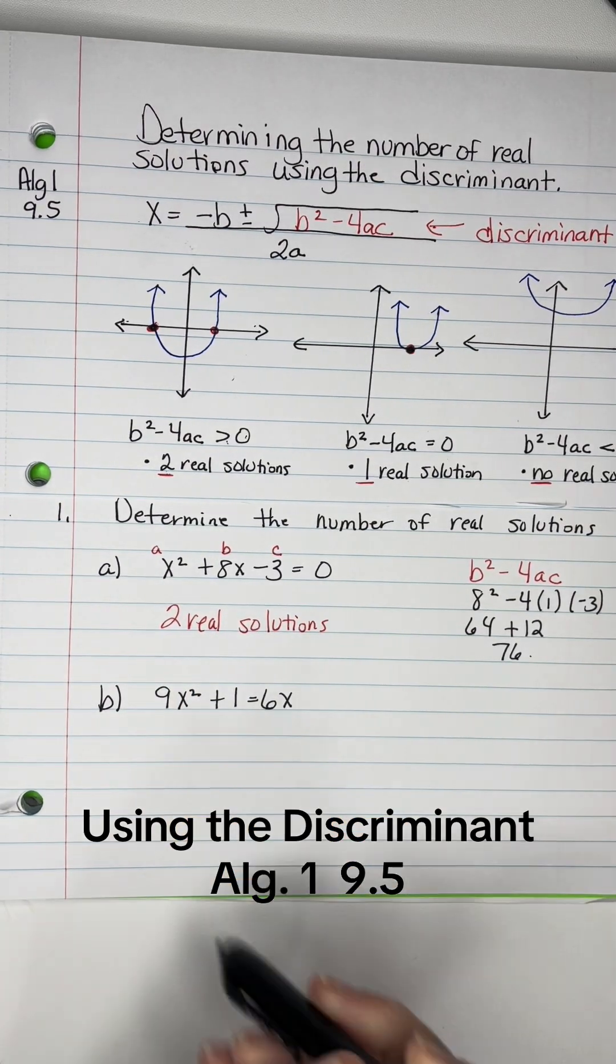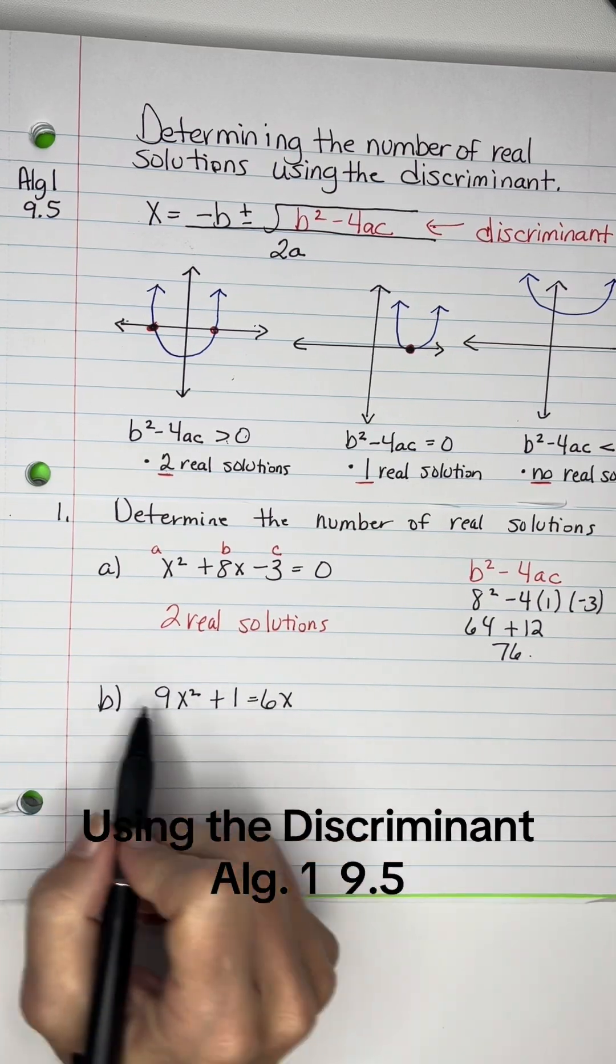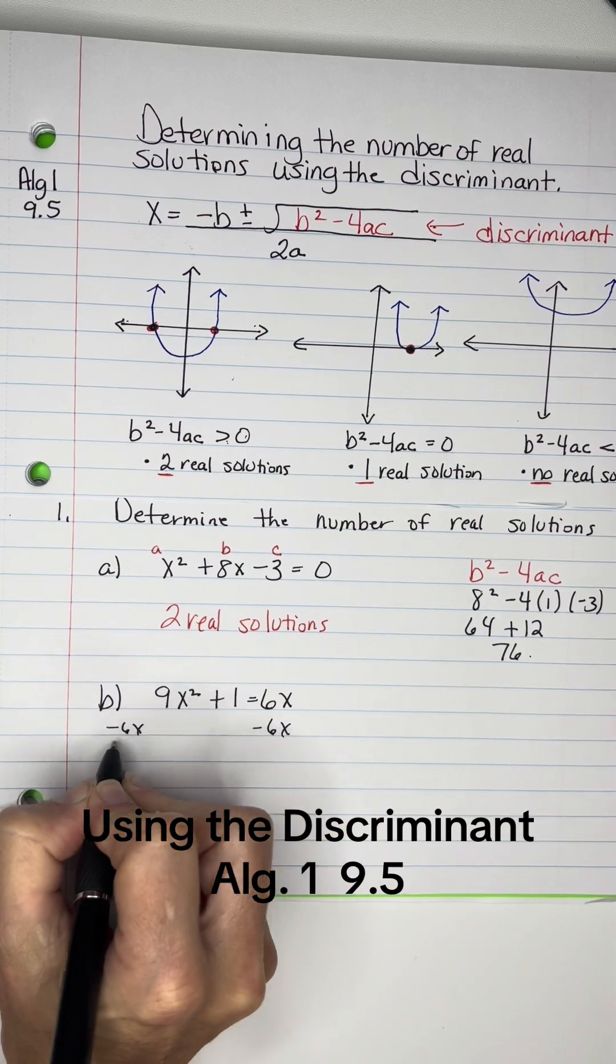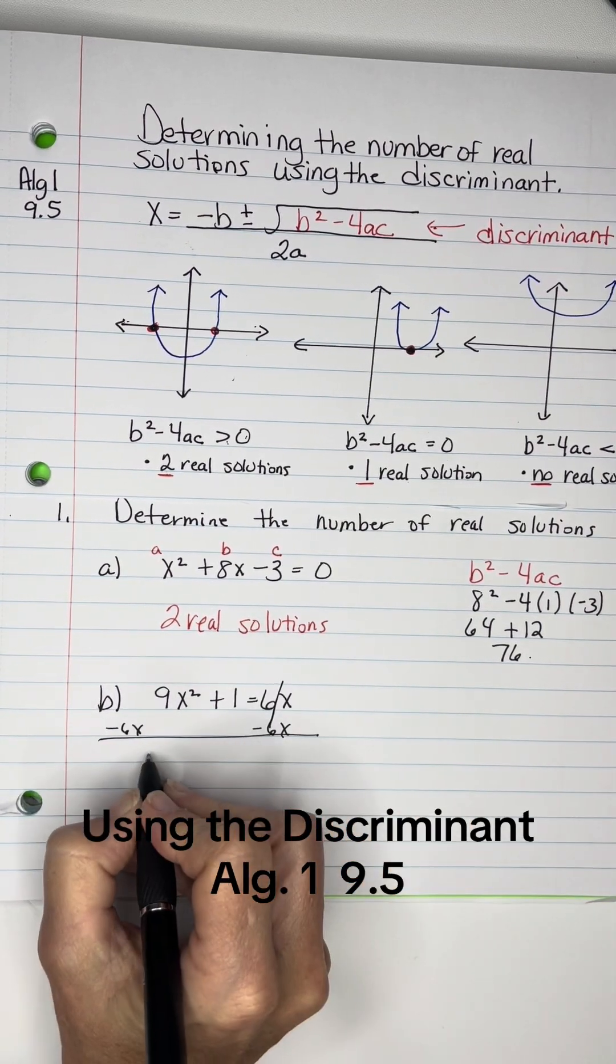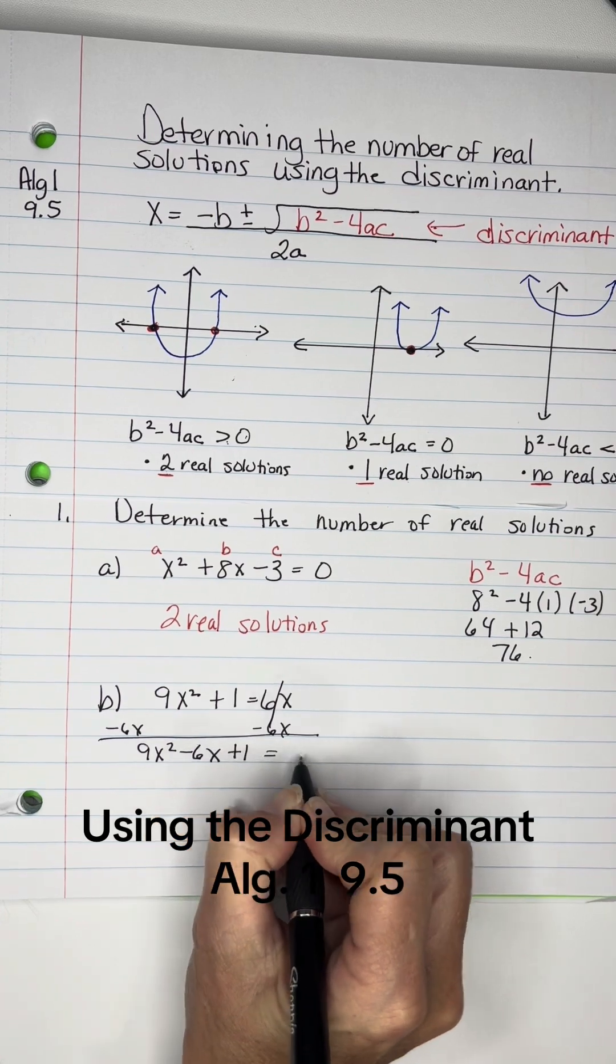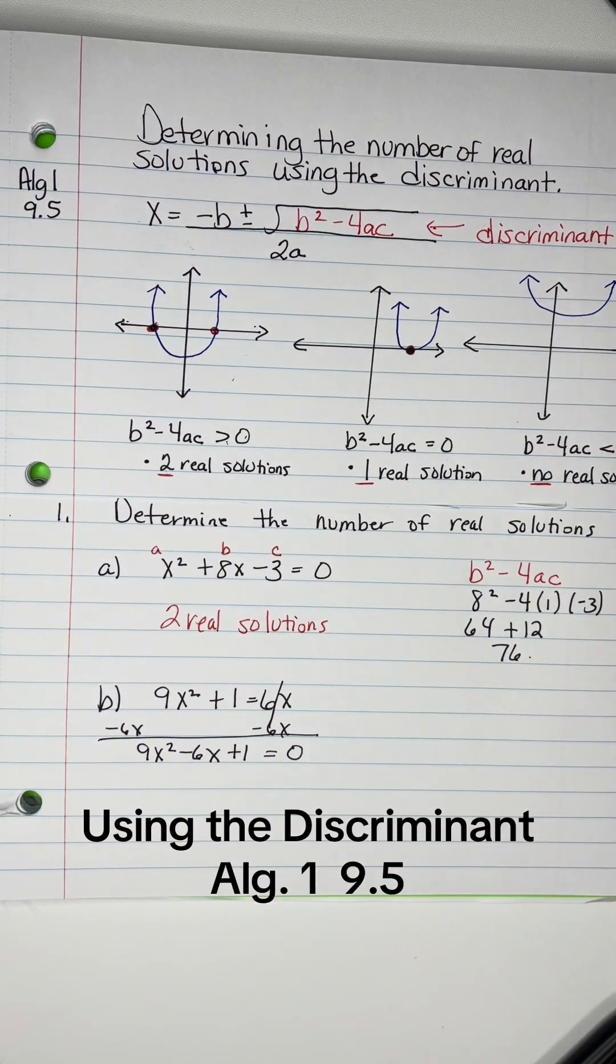All right, on this one right here, it's not in standard form yet. So let's subtract 6x from both sides to make it that way. Put your 9x squared in front of your negative 6x, and then your 1 equals 0. Okay, it's ready now.